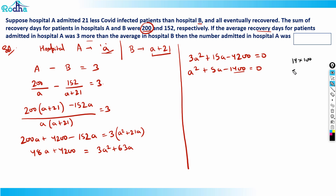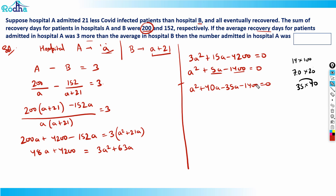I can double one factor and halve the other: 20 doubled is 40 and 70 halved is 35 — that gives a difference of 5. So I can write A² + 40A − 35A − 1400 = 0, which factors as A(A + 40) − 35(A + 40) = 0, giving (A − 35)(A + 40) = 0. Therefore A equals minus 40 or 35.